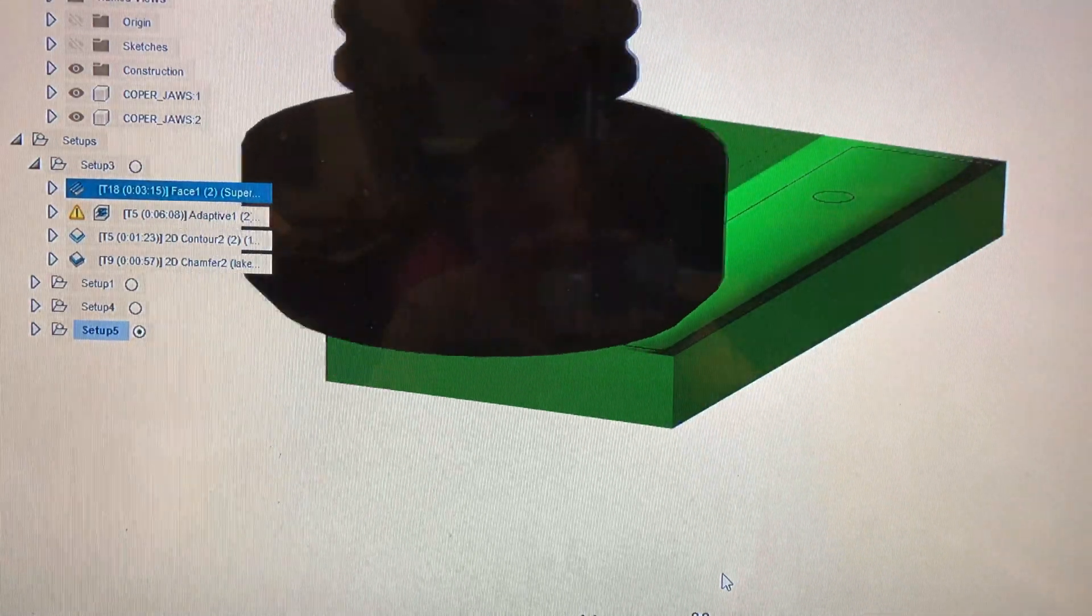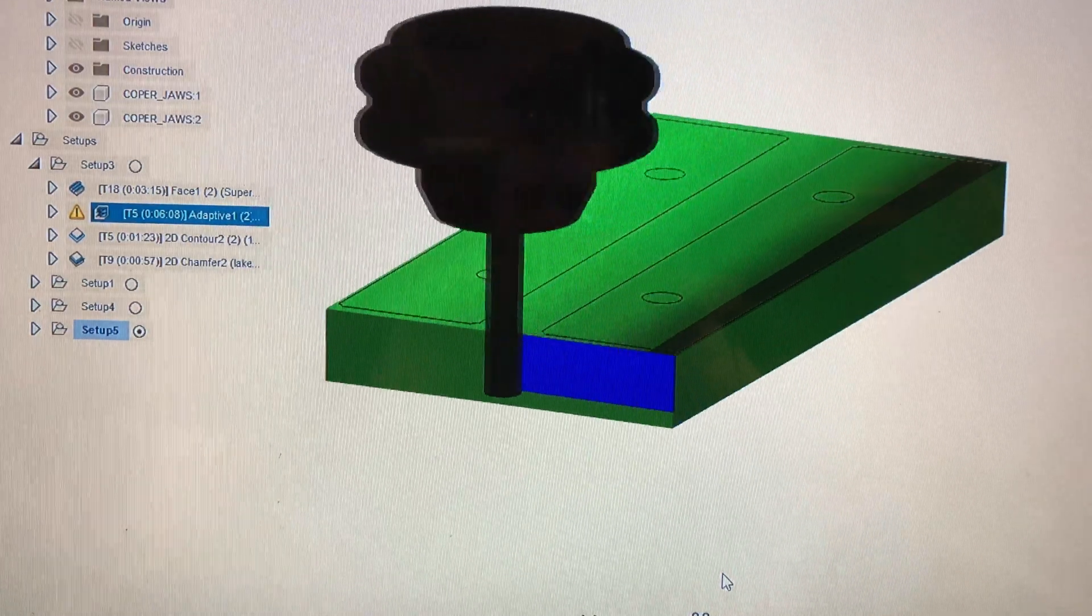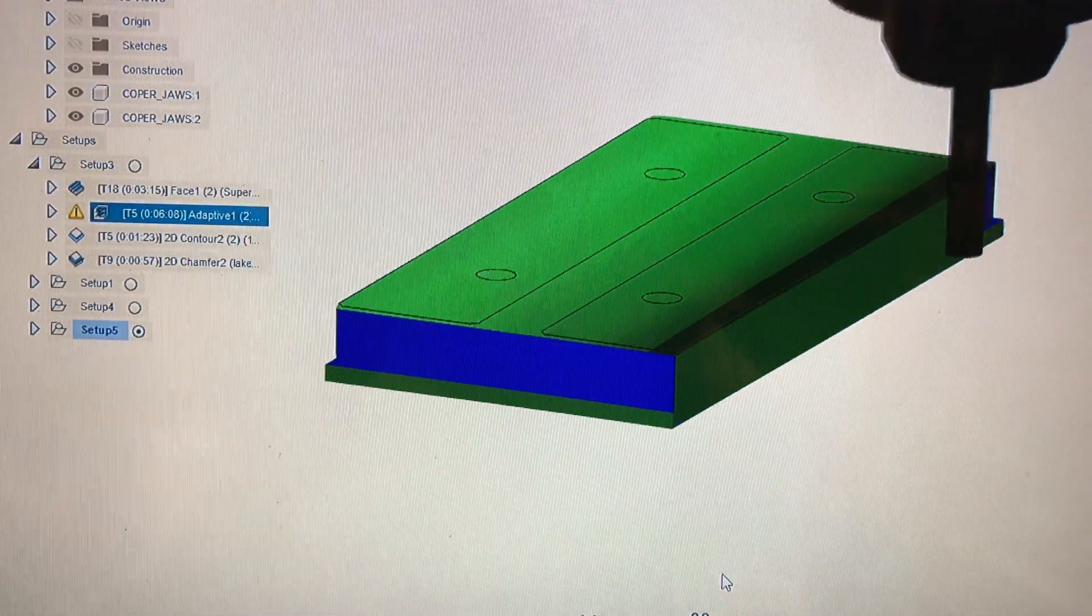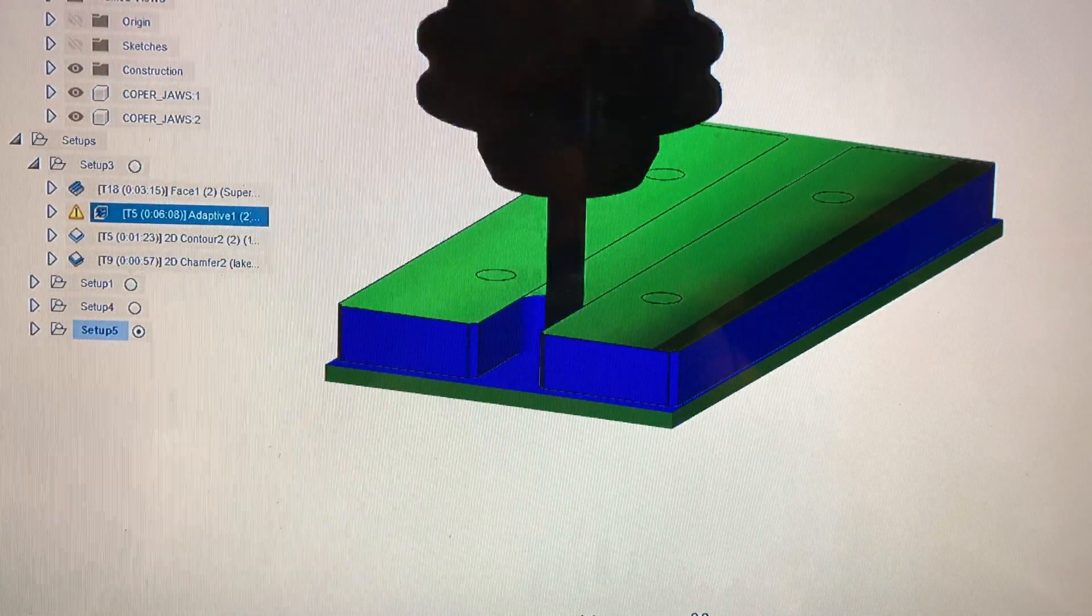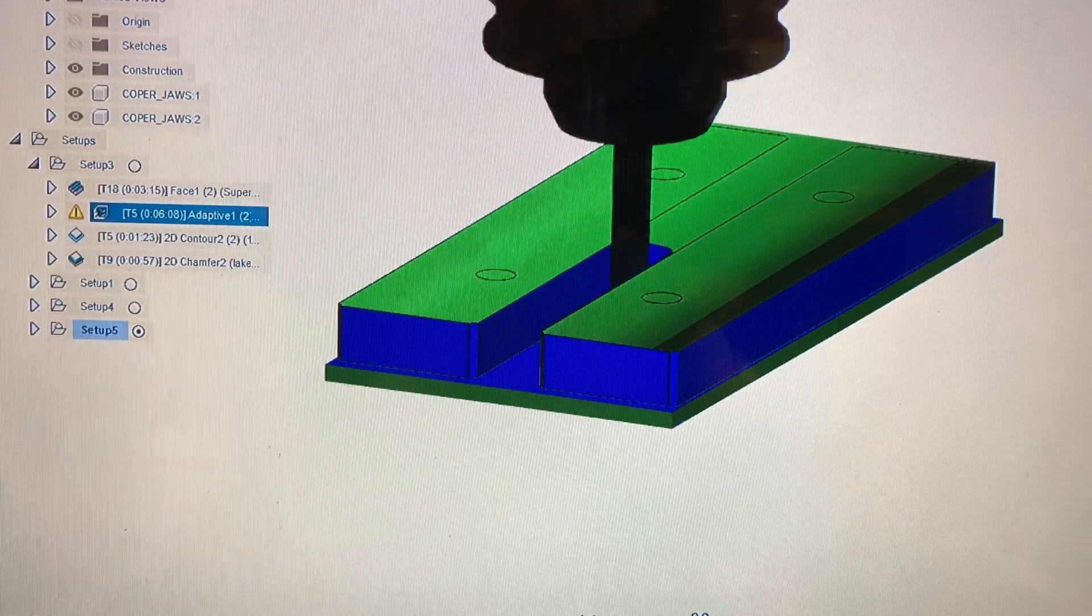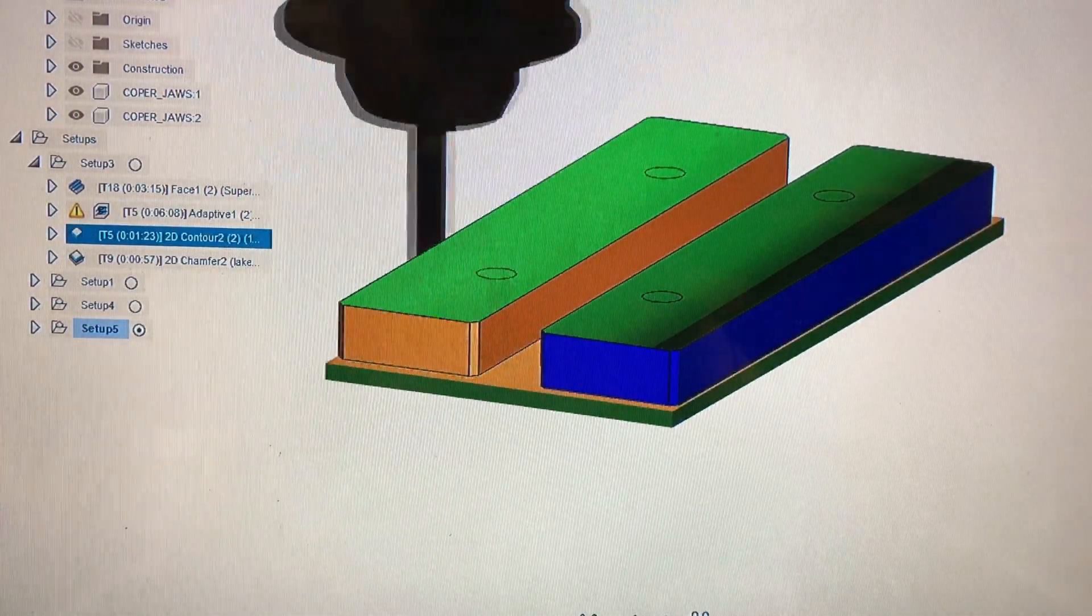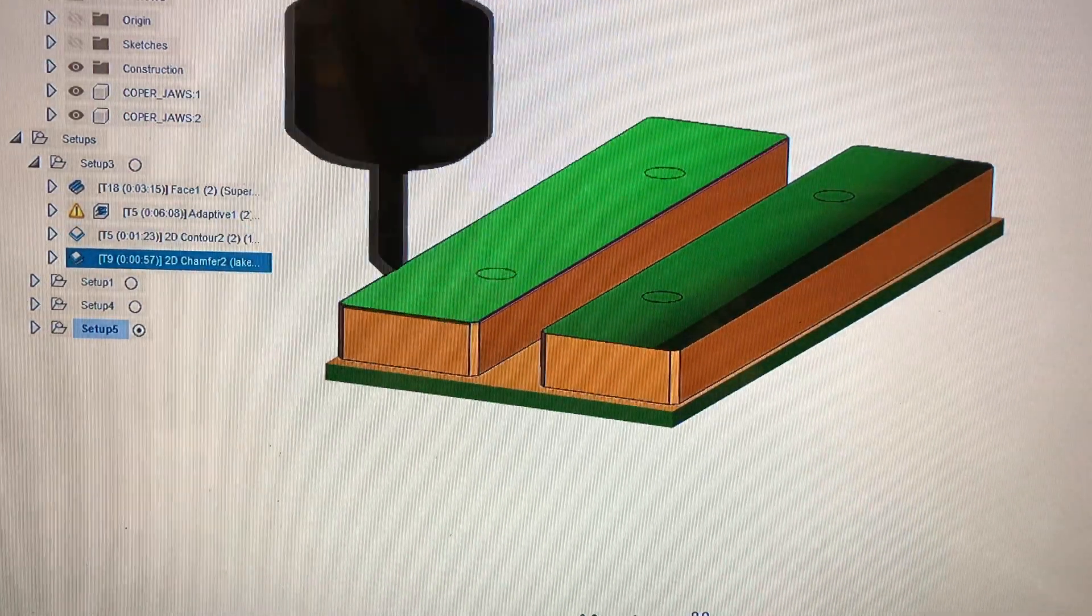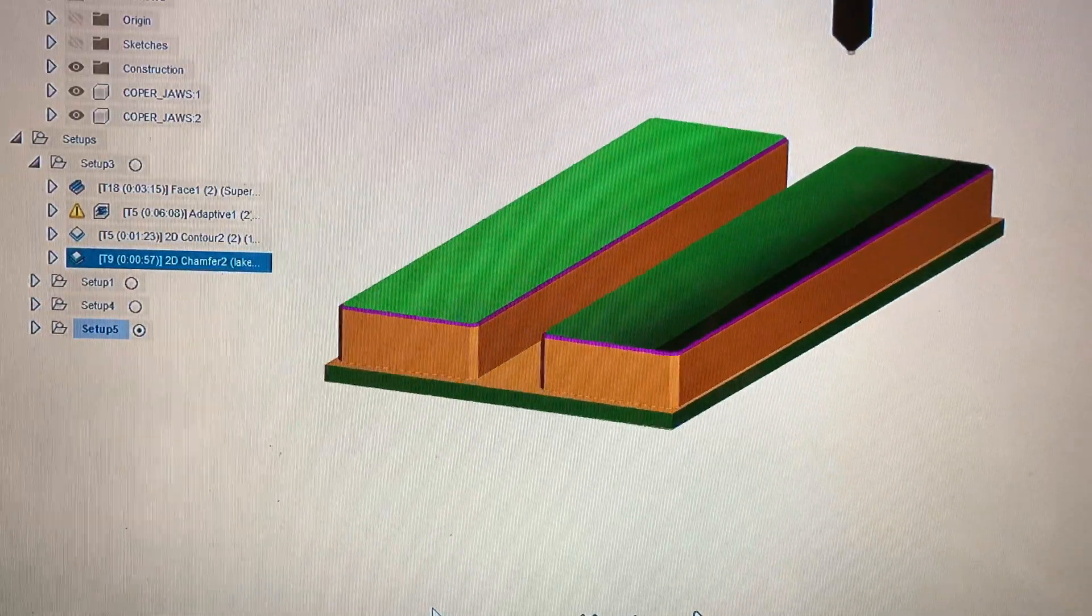We'll run the simulation. There's our facing cut to make that surface all nice and clean, followed by the adaptive toolpath. You can see the full length of the slot there, followed by the 2D contour and chamfering. We'll turn off the model. Voila.